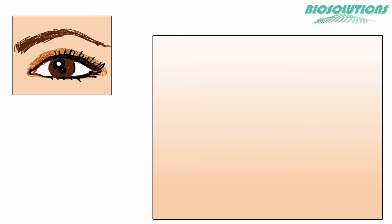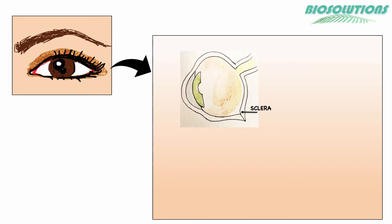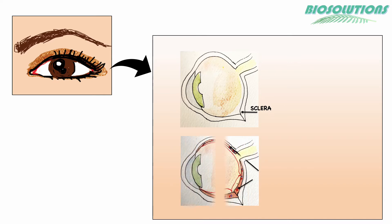The human eye is like an elongated ball, about 1 inch in diameter, with its exterior wall having 3 layers. The outermost layer is the tough white fibrous sclera, which maintains, protects, and supports the shape of the eye.